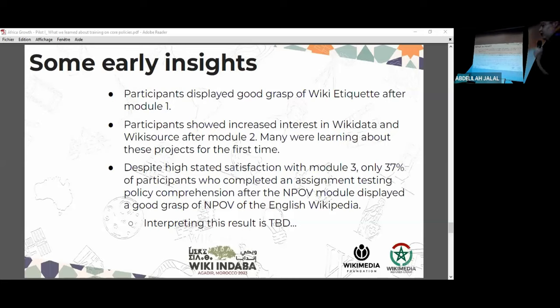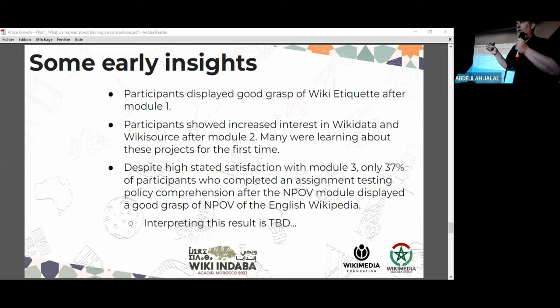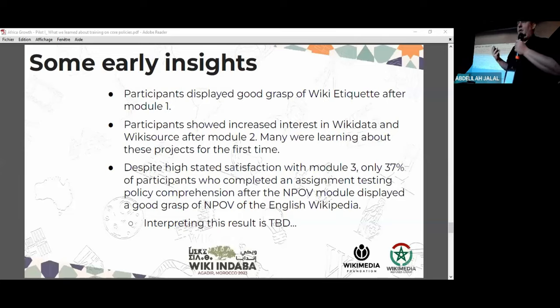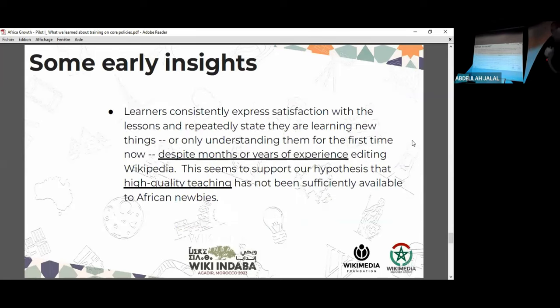If validated, we're going to scale this project up by creating more modules — for example on notability, on templates, on other things people find hard to grasp — but also to make it available in other languages. I have already received multiple requests to make this training available in French. We resisted the temptation to just offer interpretation into French because French Wikipedia has slightly different norms, and we wouldn't want to misrepresent what goes on in French Wikipedia when none of us running the project speak French or know the intricacies of French Wikipedia policy. By all means, the curriculum is good and could be translated and adapted to French by someone versed in French Wikipedia. We would like to see that happen if and when we agree it needs to be scaled up.